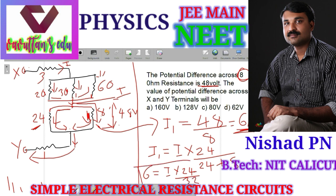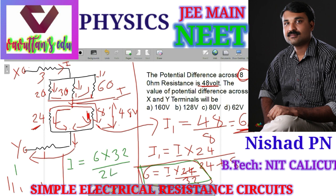Now we can simplify: I is equal to 6 multiplied by 32 divided by 24. That gives us 6 and 24, so 4 times 32 divided by 4, that is equal to 8. So current I is equal to 8 ampere.